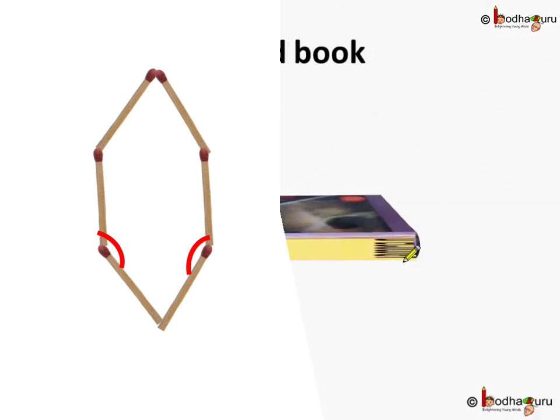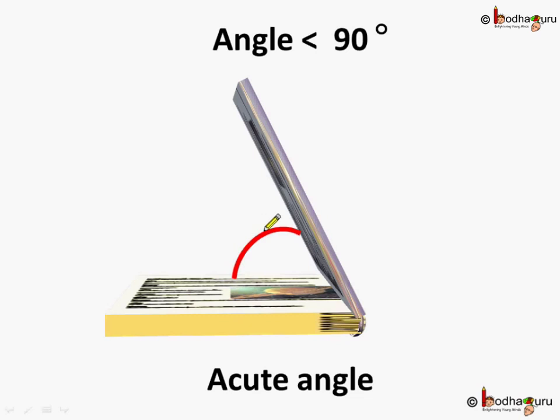Now, let us see the angles which we can make between two sticks to get a closed shape. As we open this book, notice how the angle between two sides changes. This is acute angle, which is less than right angle.